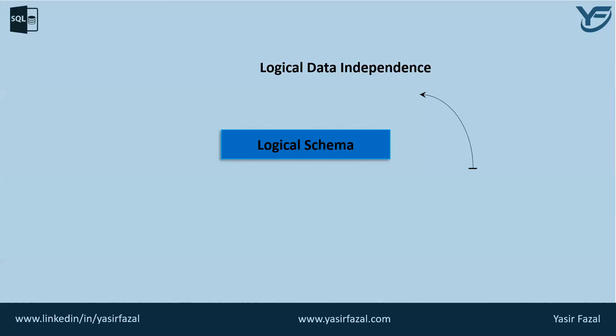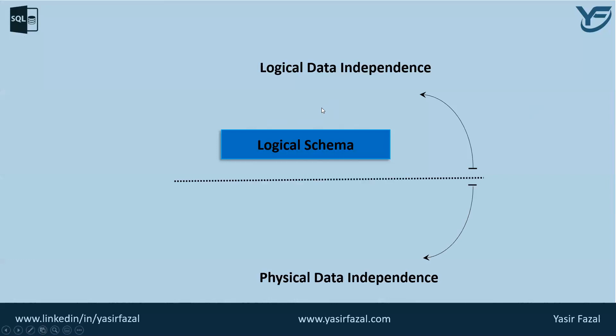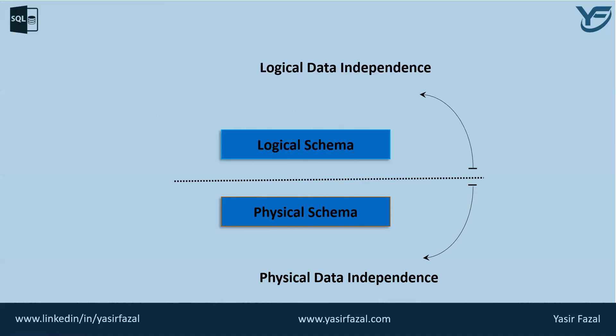In comparison to logical data independence, we have physical data independence, which applies on the physical schema. All the logical schemas and actual data are stored in bit format on the hard disk. Physical data independence is the power to change the physical data without affecting the schema or logical data. For example, if we want to change or upgrade the storage system itself — suppose we want to replace a hard disk with an SSD — it should not have any impact on the logical data or schemas.